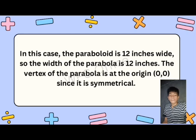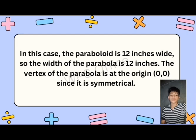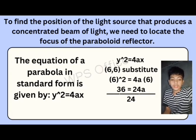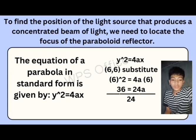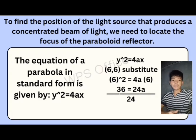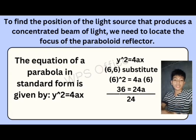The width of the parabola is 12 inches wide, and its depth is 6 inches. Since the parabola is 6 inches deep and the half-width is 6, we assume the coordinates are (6, 6), where x equals the depth and y equals the half-width.